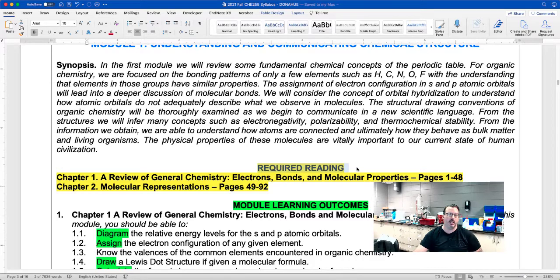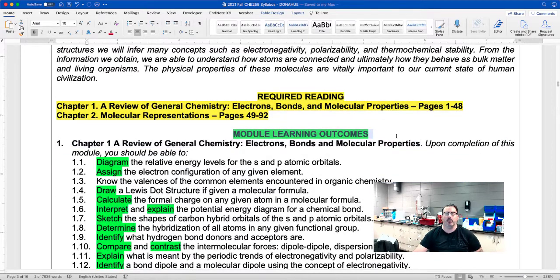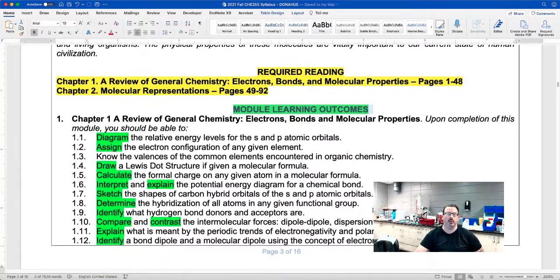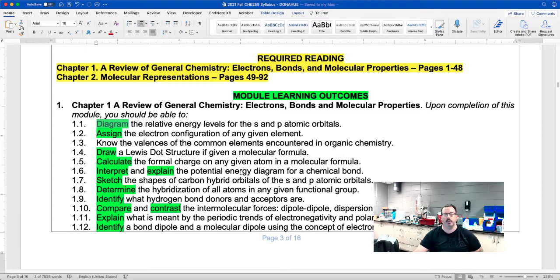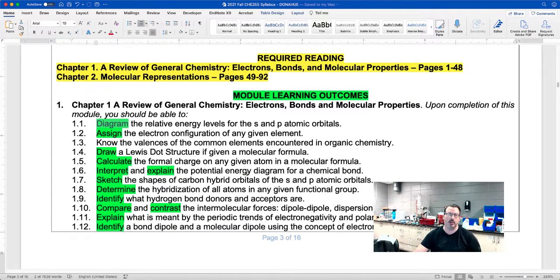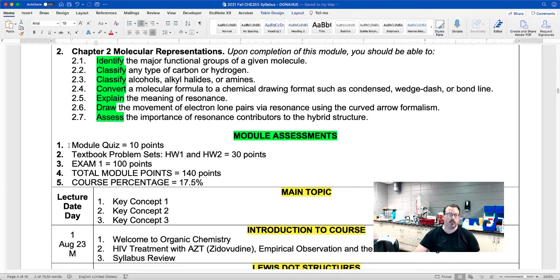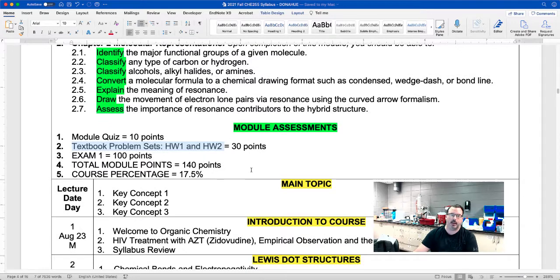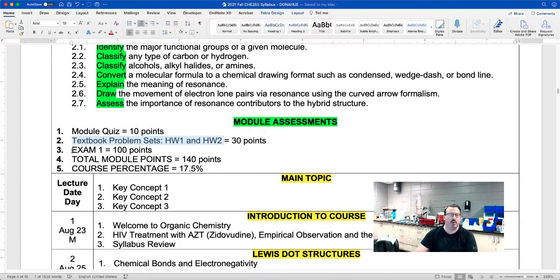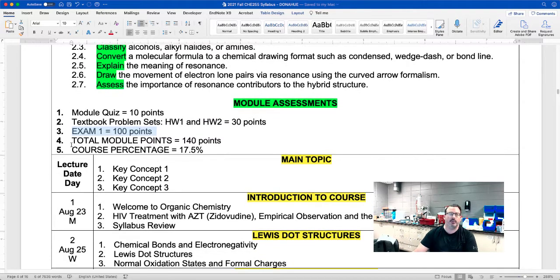There's the required reading from the text. So for example, module one, you need to read chapters one and two. These are module learning outcomes. So again, we have course learning outcomes. These are module learning outcomes. Again, the verbs in green are what you need to demonstrate to show me that you understand the material. So each chapter has module learning outcomes. The module assessments. You'll take a pre-module quiz that demonstrates that you understand what you're going to be doing in the module. And all those answers can be found in the syllabus. You'll do textbook problem sets, one for each chapter. Each problem set is worth 15 points. Each module will have an exam worth 100 points. So roughly each module is worth about 20% of your grades. So five modules. The points are pretty much distributed evenly. So 20% for each module.